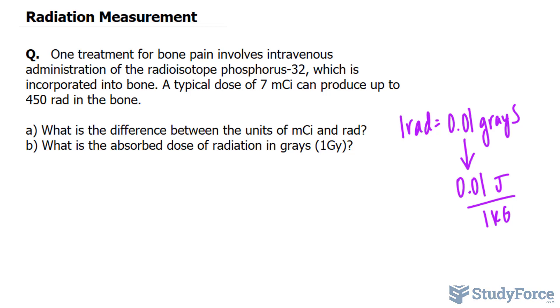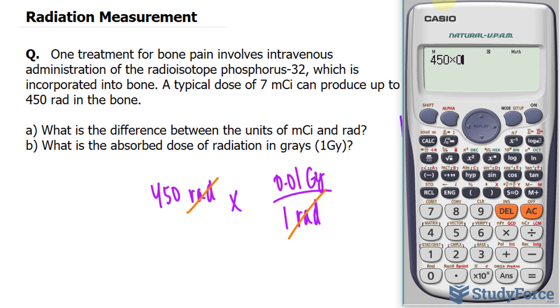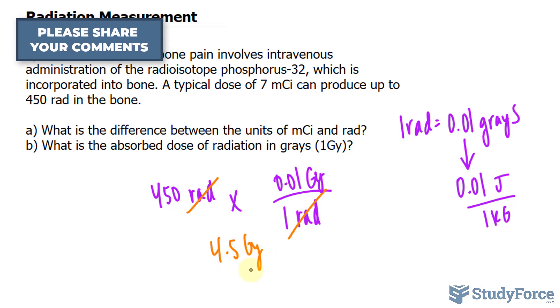The rad, on the other hand, which is the radiation-absorbed dose, is a measure of the amount of radiation absorbed by the bone. And in part B, they ask: what is the absorbed dose of radiation in grays? So all we have to do is take 450 rad and multiply it by 1 rad found at the bottom of our conversion ratio and 0.01 Gy at the top. What this will do is cancel out the radiation unit, and multiplying 450 by 0.01 gives us 4.5 grays.